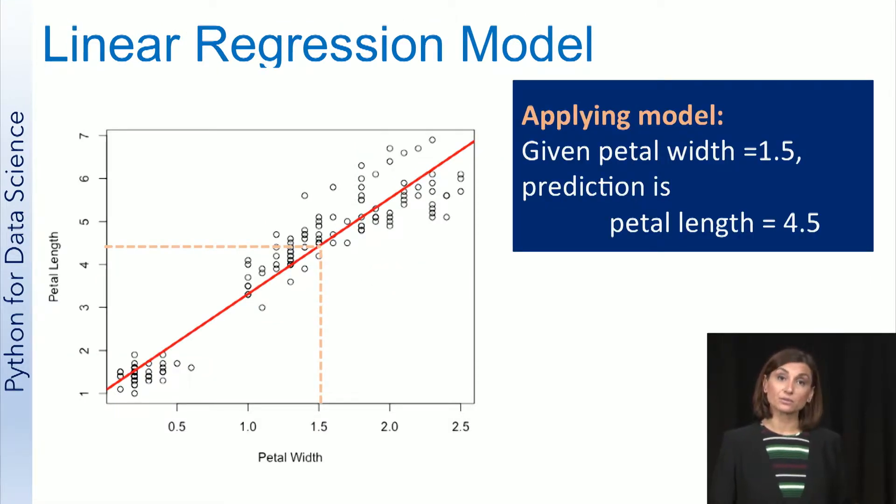Once the regression model is built, we can use it to make predictions. For example, given a measurement of 1.5 cm for petal width, the model would predict the value of 4.5 cm for petal length, based on the regression line that it has constructed.